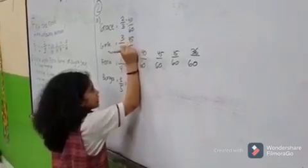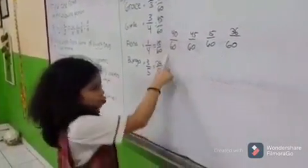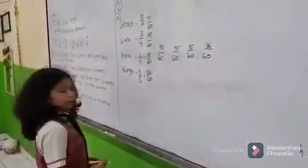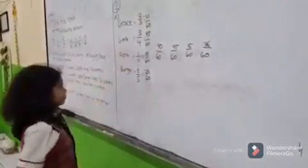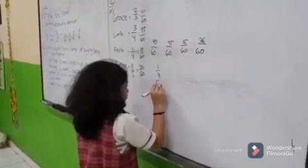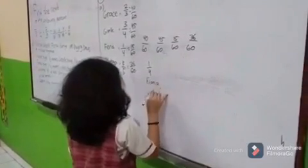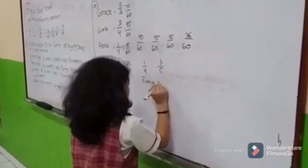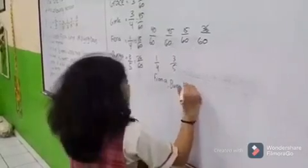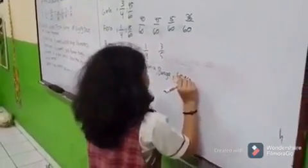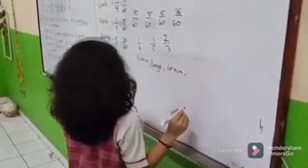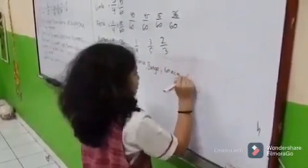Now let's arrange it. Because we have all the denominators the same, we know how to arrange the bows and we can arrange them with their names. First is fifteen-sixtieths for Fiona. Second is thirty-six-sixtieths for Puma, three-fifths. Third is forty-sixtieths for Grace, two-thirds. And last is forty-five-sixtieths, three-fourths.